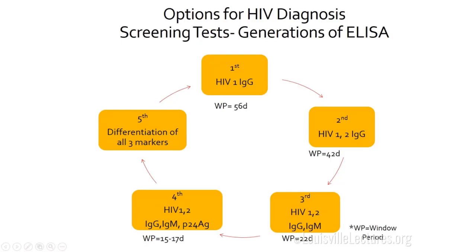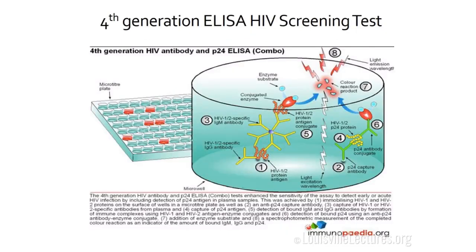When the fourth generation combo test comes back positive, you know it's positive but don't know which component — IgM, IgG, or P24. Clinically, it doesn't change management, though a fifth generation test that identifies which component is positive is coming. The fourth generation works by bundling antigen and antibody together in the ELISA well — whatever from the patient's blood sticks causes a color change.